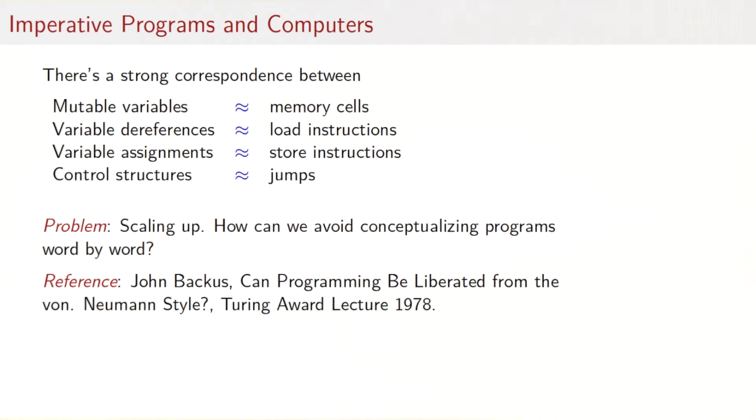Variable dereferences correspond to load instructions in the computer. Variable assignments relate to store instructions. Control structures all translate into a sequence of loops. That's all very well, but the problem is scaling up. We want to avoid conceptualizing programs just word by word. We want to reason in larger structures. That was the argument made by John Backus in his Turing Award lecture titled Can Programming Be Liberated from the von Neumann Style? It's noteworthy that John Backus was the inventor of the first high-level language at all, that was Fortran in the 1950s. More than 20 years later, he found that the traditional course of imperative programming had run its course, was running out of steam, and that something new was needed. The new thing he was proposing was functional programming.